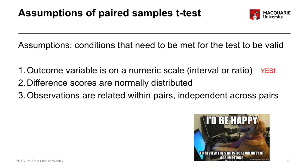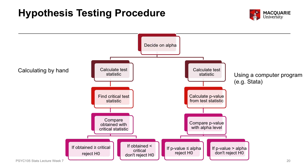Reviewing our assumptions: the outcome variable is on a numeric scale, the difference scores are normally distributed (just confirmed), and we have related observations within pairs but independence across the 32 babies themselves. To recap the process from previous weeks: we can calculate the test statistic by hand — which we'll do to understand what it's actually representing — or using a computer program like Stata, which you would use in an actual research project.